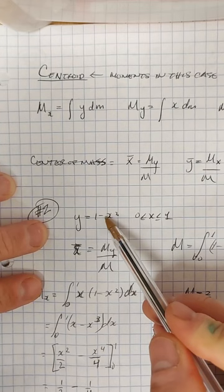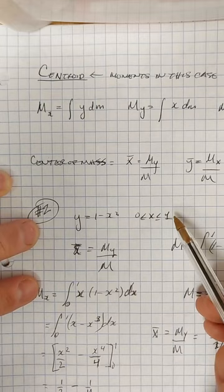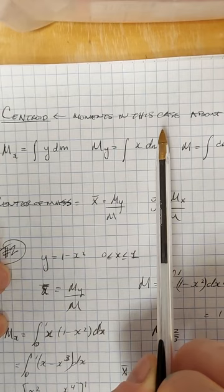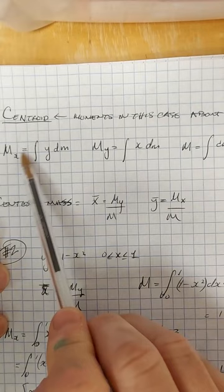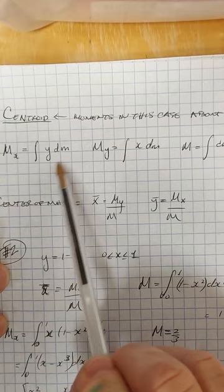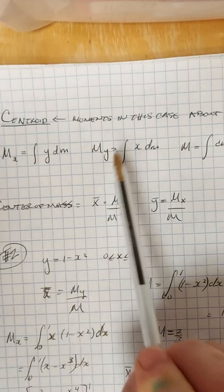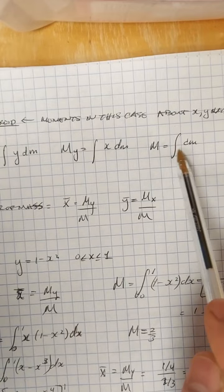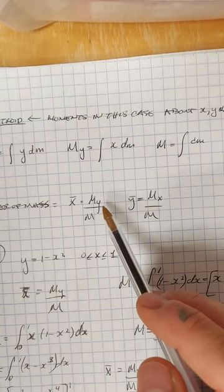In problem 2, we're asked to consider the function y equals 1 minus x squared on the region from 0 to 1, and find the centroid for this region. A little background: the centroid is found using moments. The book denotes it as Mx, which is the integral of y times the function over the region, and My for the x-direction. The total mass is the accumulation of all individual masses over the region.